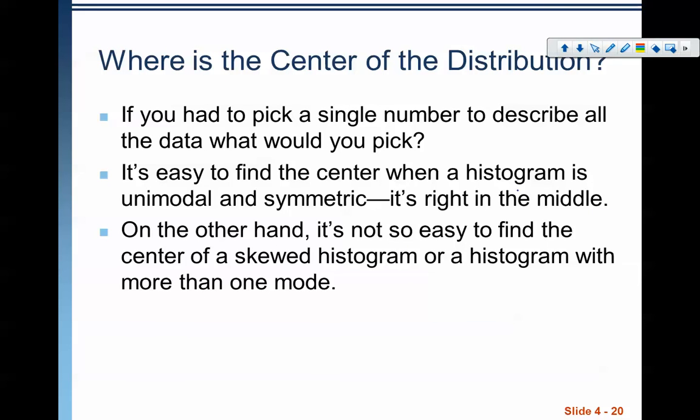So, finally, so there's my shape. When we're talking about the shape, we answer those three questions. We also want to talk about the second part, the center. So, when we're talking about the center, we're really asking ourselves this question. If we had to pick a single number to describe all the data, what number would we pick? It's easy to find the center when a histogram is unimodal and symmetric. It's right in the middle. When we have a unimodal and symmetric bar graph, something that's kind of like that, the center should be easy to find because it's whatever is in this bar in the middle right here.